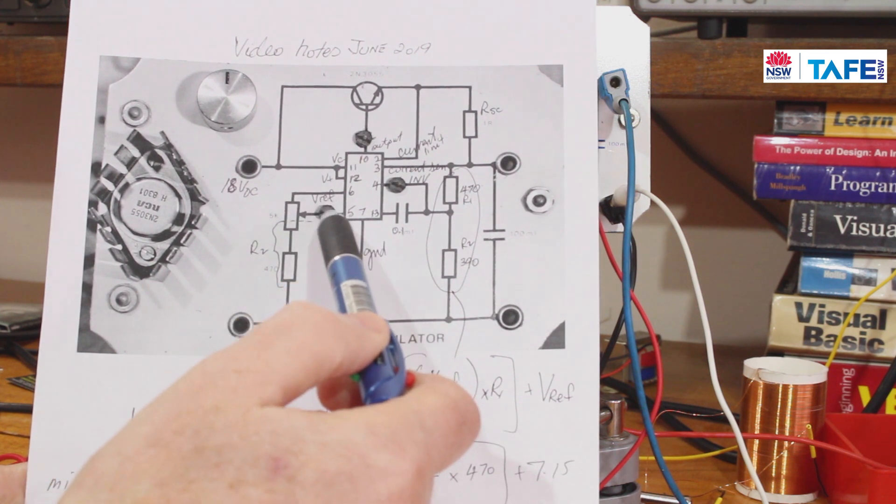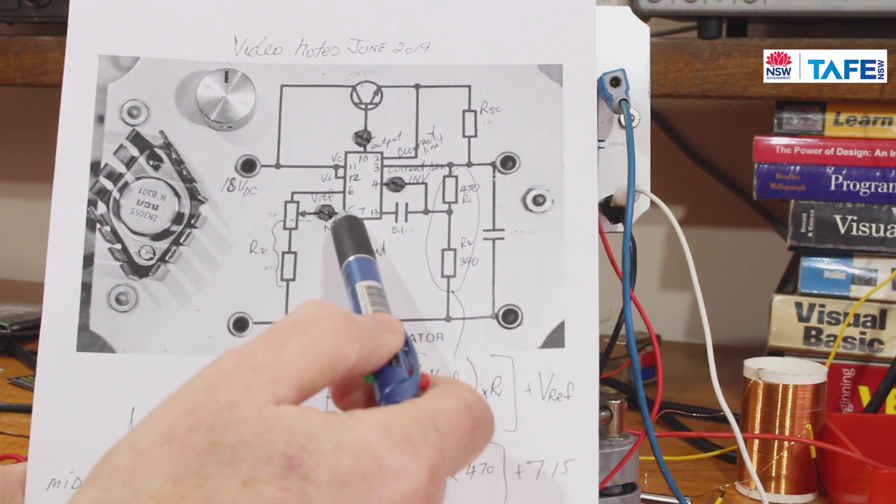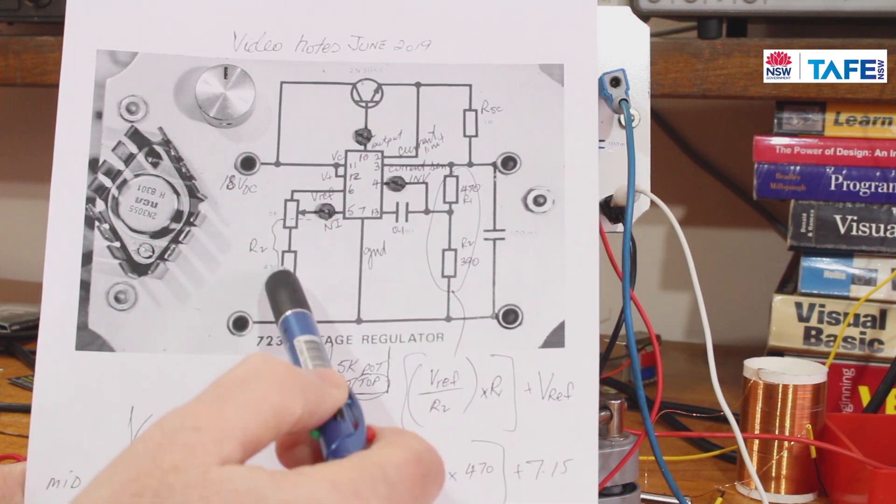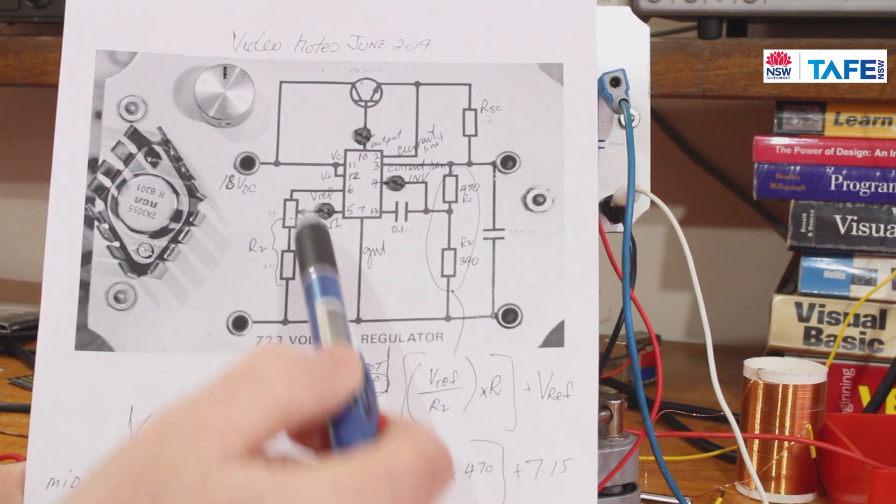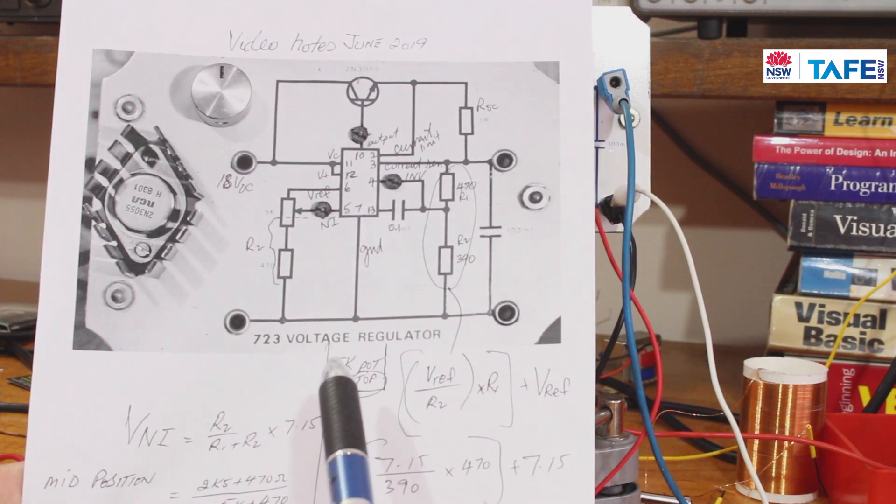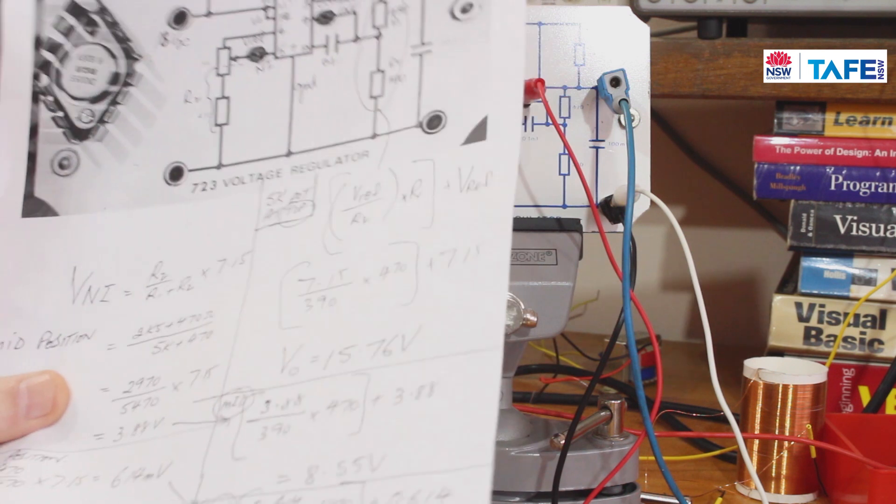That's providing that we haven't got too much input offset bias current causing a voltage drop across there and altering it, but with 5k, more than 5k, that shouldn't be a problem. So let's have a look at that first voltage.